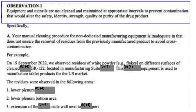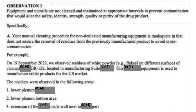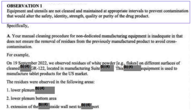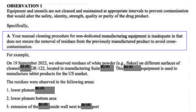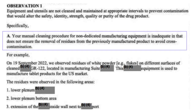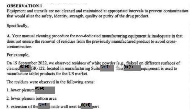Observation number one — the title is: Equipment and utensils were not cleaned appropriately to prevent contamination. Under this observation, auditors gave eight examples. Example number one: your manual cleaning procedure for the non-dedicated manufacturing equipment was inadequate — it does not ensure the removal of the residue of previously manufactured product. The reason auditors stated this lies in the following example.